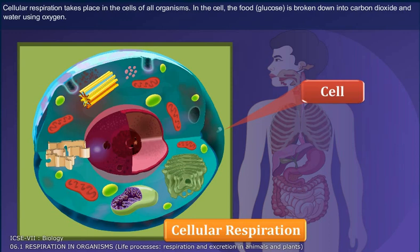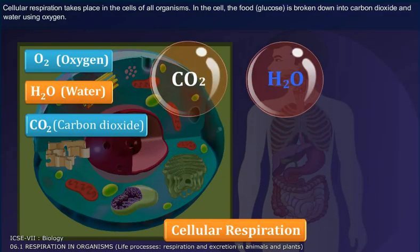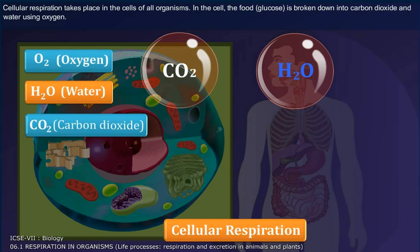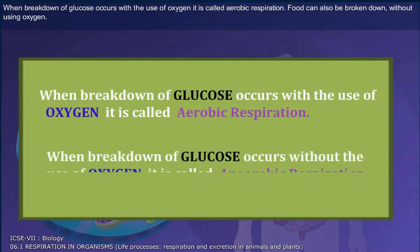Cellular respiration takes place in the cells of all organisms. In the cell, the food — i.e., glucose — is broken down into carbon dioxide and water using oxygen. When breakdown of glucose occurs with the use of oxygen, it is called aerobic respiration. Food can also be broken down without using oxygen.